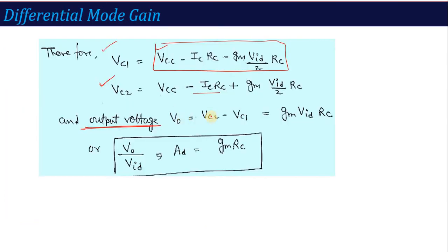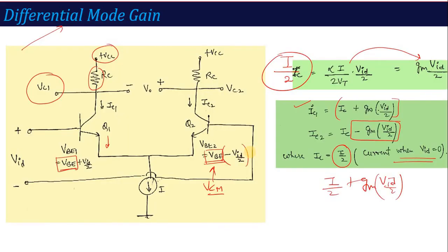So this is the VC1 voltage, this is the VC2 voltage, and if I talk about output voltage which is calculated in double ended operation, that is the difference between these two output voltages. So what will be the V0 value? V0 value will be VC2 minus VC1. So subtract VC1 from VC2: VCC cancels out, ICRC cancels out, these two terms will add up and this becomes Gm VID RC. And if you take VID to the other side, this will become V0 by VID, that is nothing but the differential gain is equal to Gm into RC. So this is the simple way how you will calculate the differential mode gain in case of BJT differential amplifier.